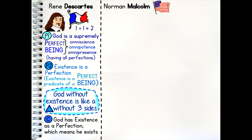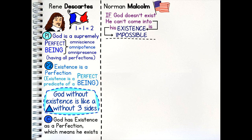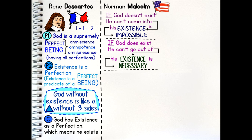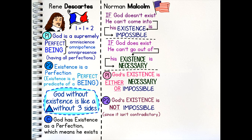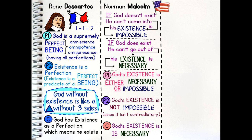Norman Malcolm, a 20th century American philosopher, developed Anselm's second argument focusing on the idea of necessary existence. He said if God doesn't exist, he can't then come into existence or he would not be God. So if God doesn't exist, his existence is impossible. Conversely, if God does exist, he can't cease to exist or he wouldn't be God — in other words, if God exists, his existence is necessary. Malcolm then argues: Premise one, God's existence is either necessary or it is impossible. Premise two, God's existence is not impossible since it is not self-contradictory. Therefore God's existence must be necessary, which means God exists.